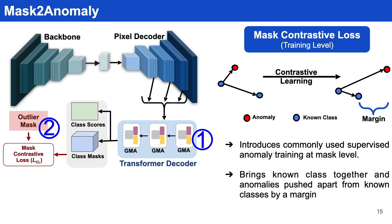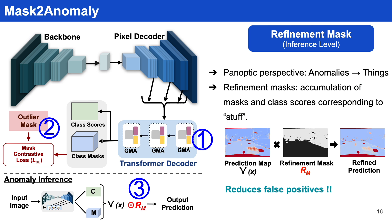Next, we introduce mask contrastive loss at the training level. Mask contrastive loss uses a supervised way of anomaly training at the mask level. The idea behind it is to bring the known classes together and push the anomaly apart from the known classes by a margin.